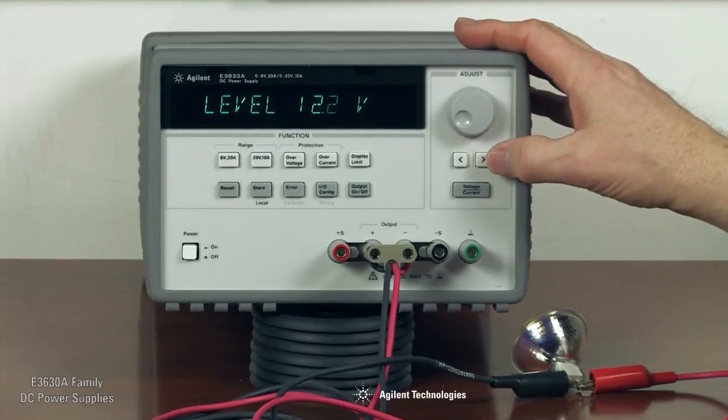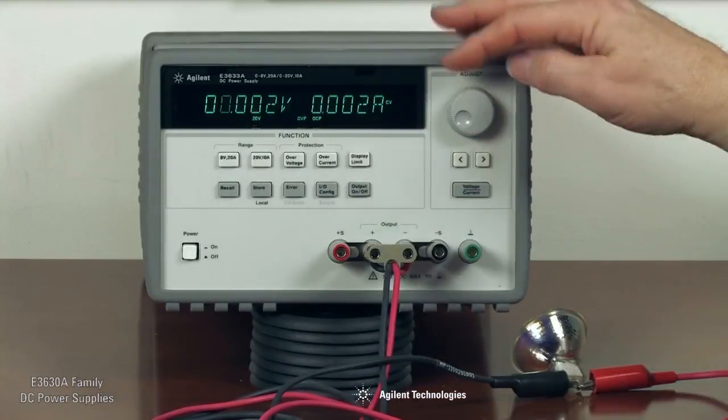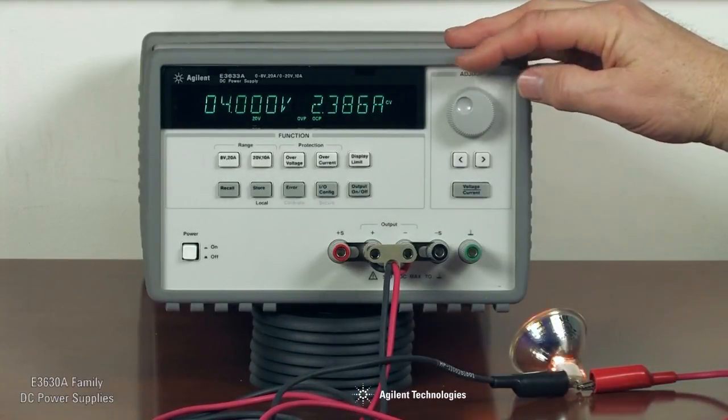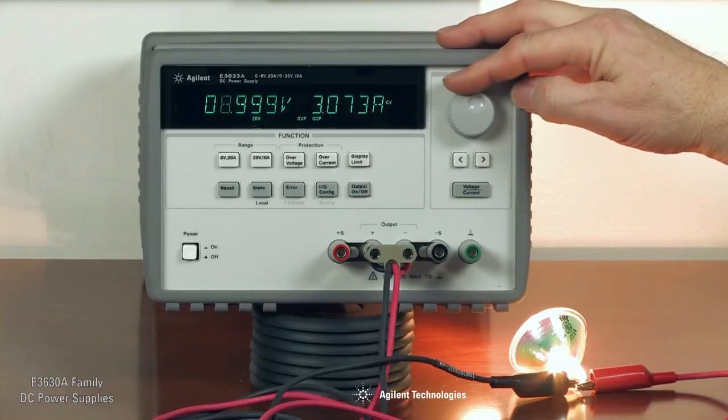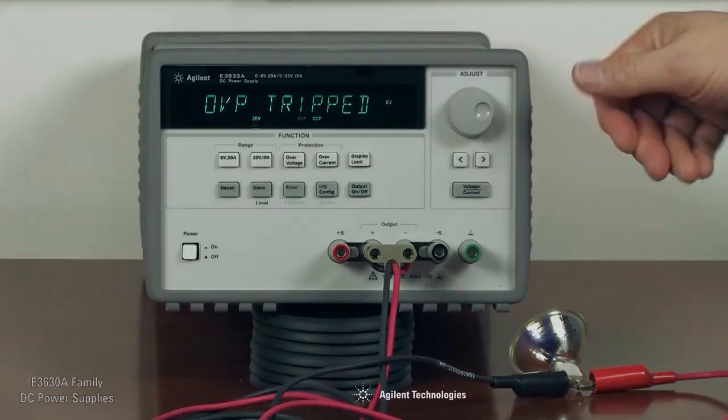For example, with a 13.2 volt 50 watt light bulb connected to the power supply, we can set the upper voltage protection to 12.2 volts. As we increase the voltage and reach the 12.2 volt limit, the over voltage protection is tripped and the output drops to zero, thus protecting the light bulb.